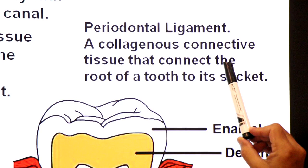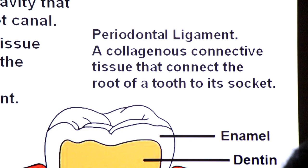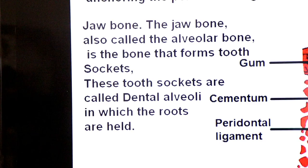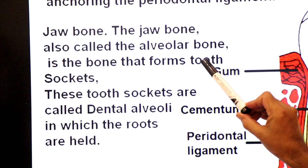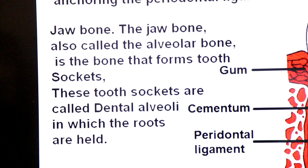The periodontal ligament is a collagenous connective tissue that connects the root of the tooth to its socket — these sockets are called dental alveoli. The jaw bone, also called alveolar bone, is the bone that forms the tooth sockets called dental alveoli, in which the roots are held. Today we have covered the structure of tooth and parts of tooth. Thank you dear students, wish you all the best.